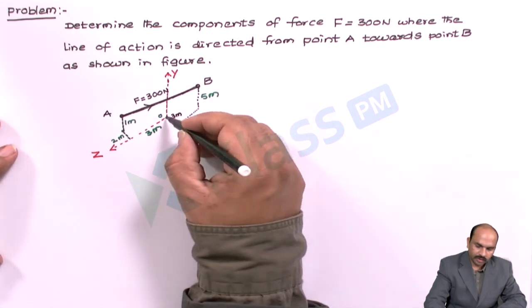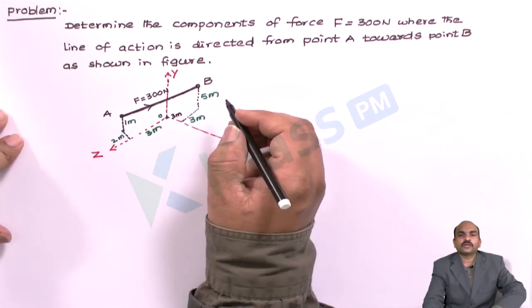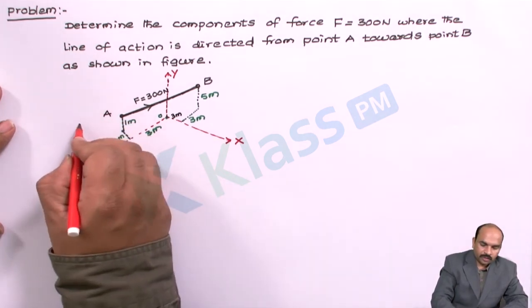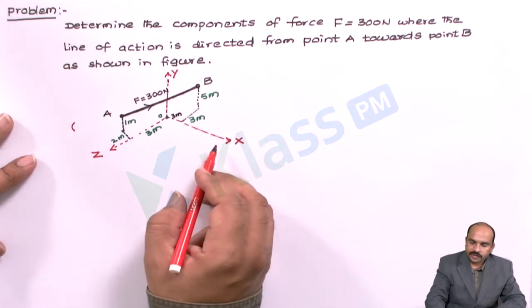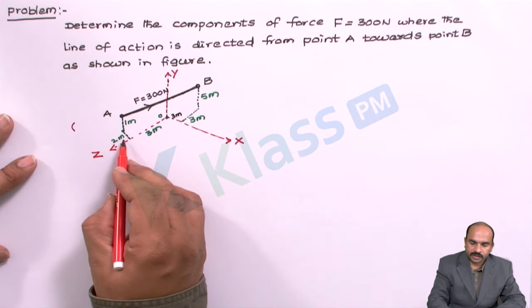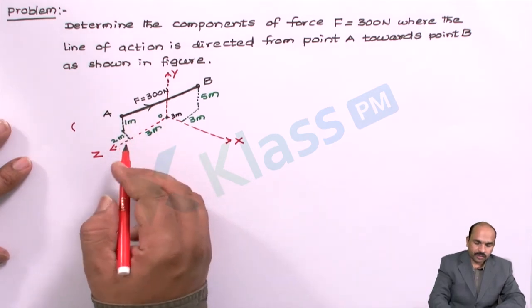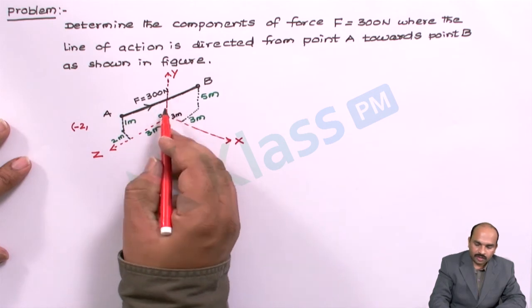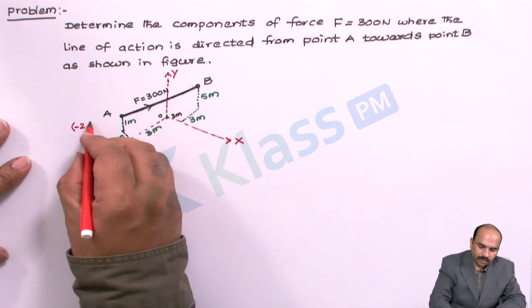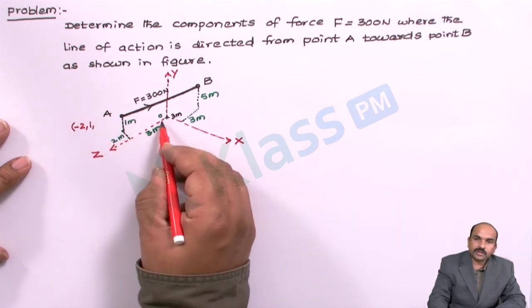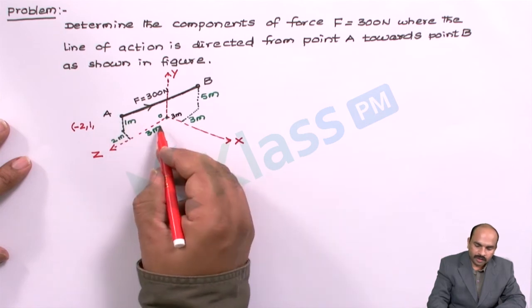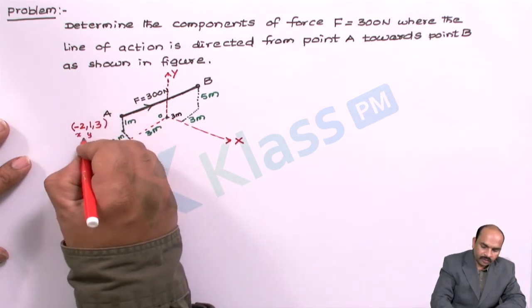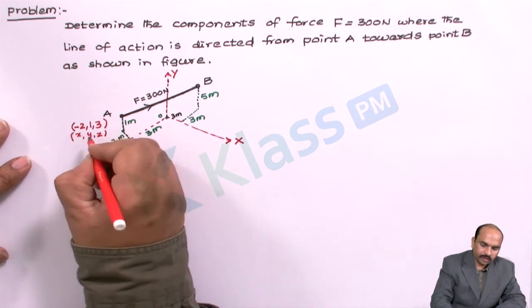The distances given in the problem are: 1 meter, 2 meter, 3 meter, 5 meter, and 3 meter. Let us write the coordinates for point A. The distance above the x-axis but behind it becomes minus 2. The 1 meter distance is parallel to the y-axis and upward, so it is plus 1. The 3 meter distance is connected to point A about the z-axis, so z equals 3. So point A has coordinates: x = −2, y = 1, z = 3.